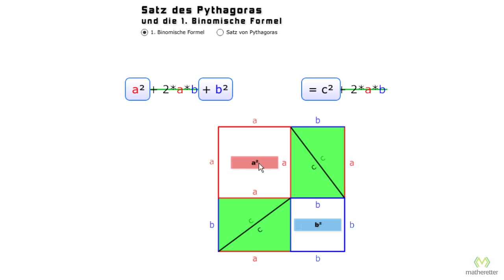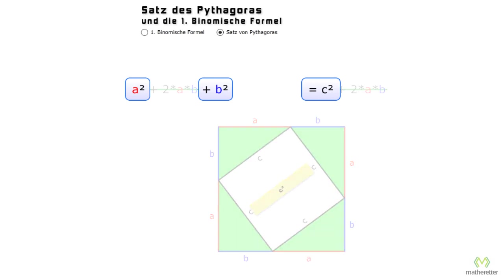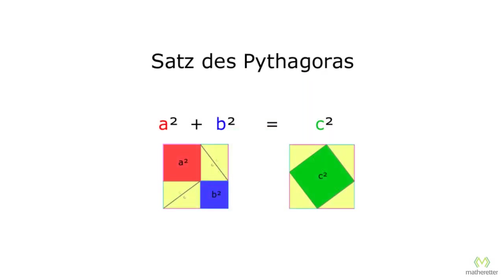On the left we have the rest of the white area as A squared plus B squared, and on the right we have the rest of the white area as C squared. The areas are the same size — they have a different shape, but the same area. Therefore, A squared plus B squared equals C squared. And that is exactly the famous Pythagorean theorem.